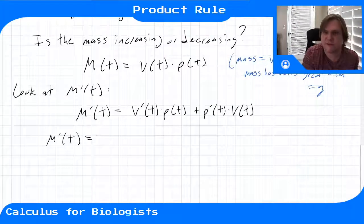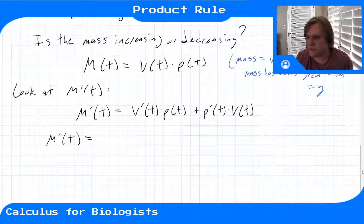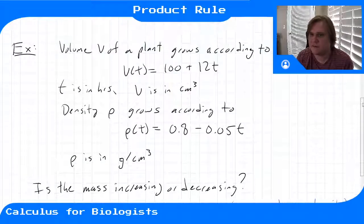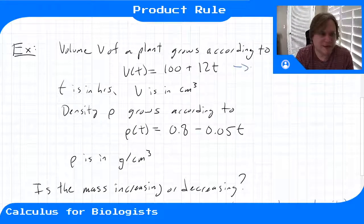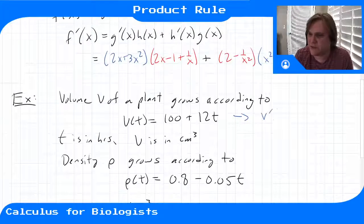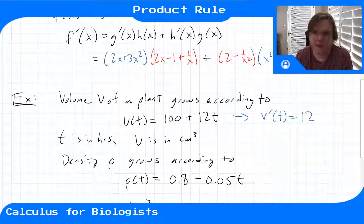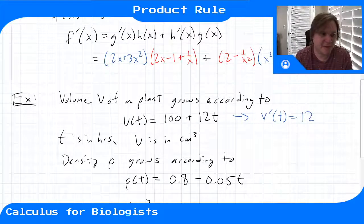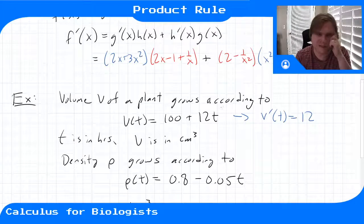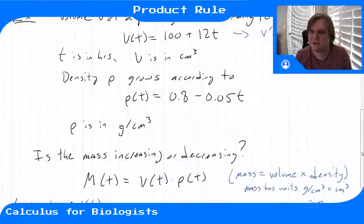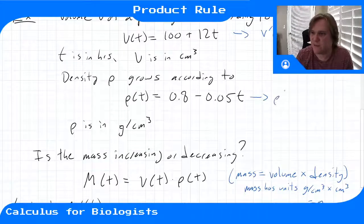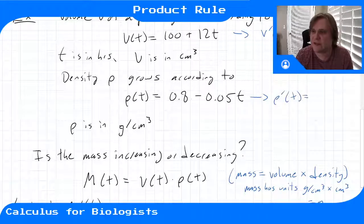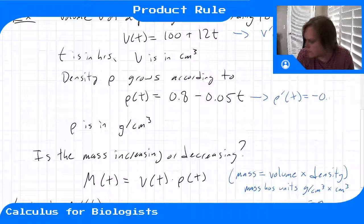M prime of t is going to be equal to the derivative of v. V is here, it's a linear function 100 plus 12t, so its derivative is just going to be 12, because that's the slope of this line. We can apply the power rule: this would give us 0, the power rule of this would give us 12 times t to the 0, or 12. Same thing over here, the density grows according to this linear equation. So its derivative rho prime is given by the slope of this line, negative 0.05.